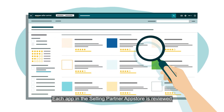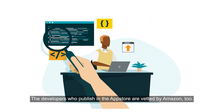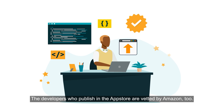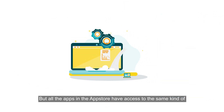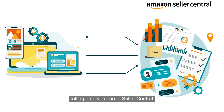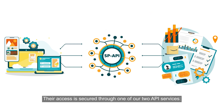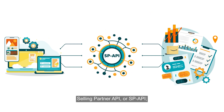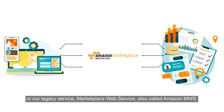Each app in the Selling Partner App Store is reviewed and authorized by Amazon. The developers who publish in the App Store are vetted by Amazon, too. Some of the apps integrate directly with Seller Central; others are standalone. But all apps in the App Store have access to the same kind of selling data you see in Seller Central. Their access is secured through one of our two API services: Selling Partner API (SP-API), or our legacy service, Marketplace Web Service, also called Amazon MWS.